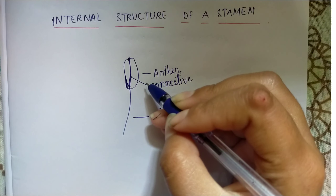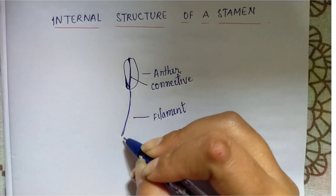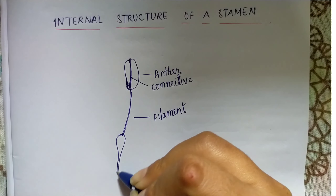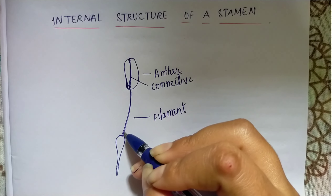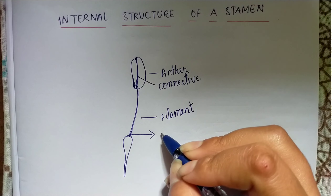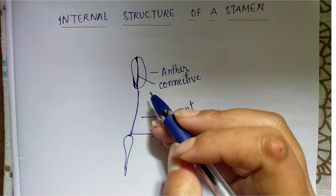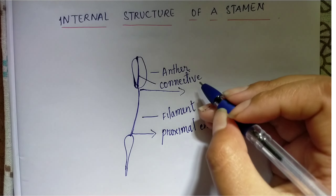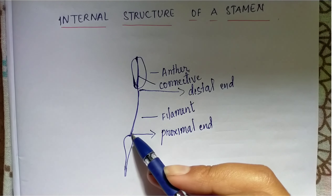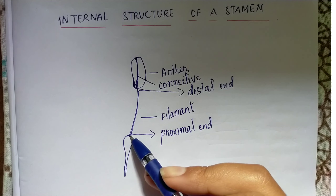So this is a bilobe anther. A filament is a thread-like structure. It may be originated from a thalamus or it may be originated from petals. The lower part of a filament is known as the proximal end, whereas the upper part is known as the distal end. Proximal means the end of a filament which is closer to the region where it originated.